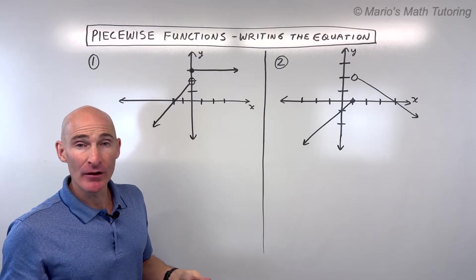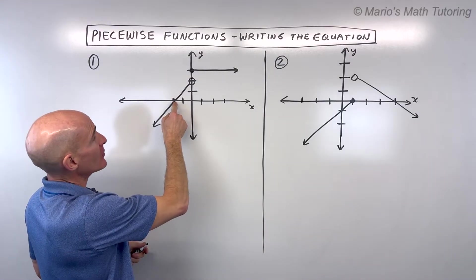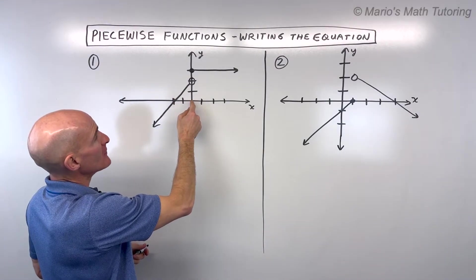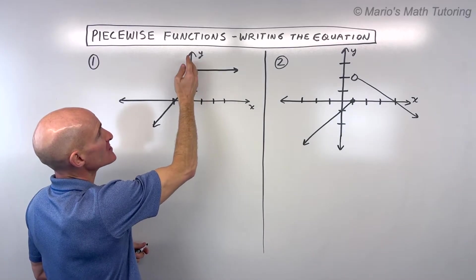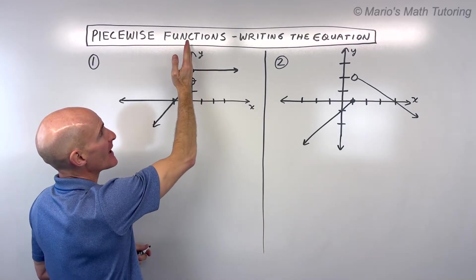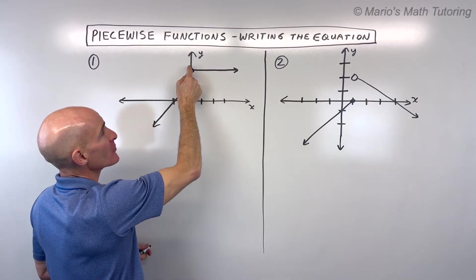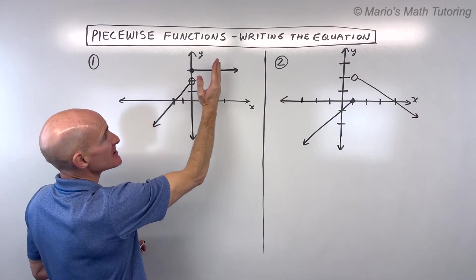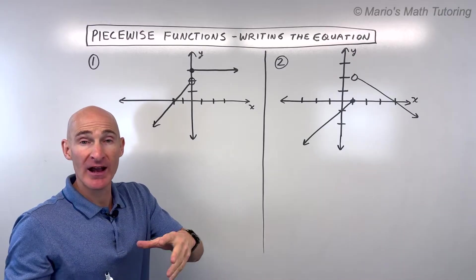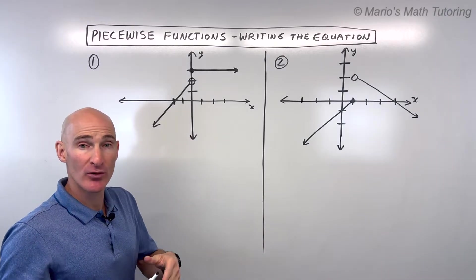But notice it's still a function because for every x value there's only one y value. Even right here where it seems like they overlap, this is open, this is closed. If we do that vertical line test, for a given x value there's only one y value. So it passes that vertical line test - for every input there's one output.